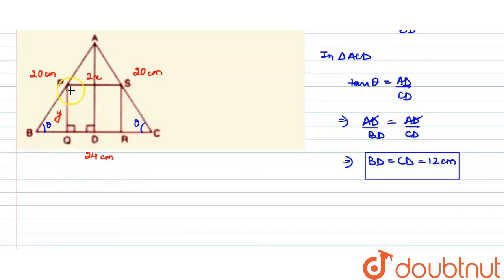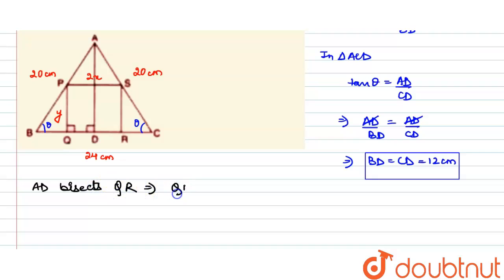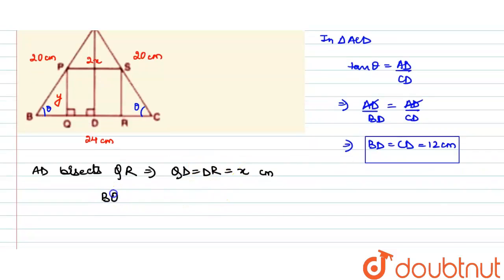AD bisects BC. Similarly, AD will also bisect QR. So QD equals DR equals X, since QR equals PS equals 2X (it's a rectangle). Therefore BQ equals BD minus QD, which is 12 minus X.